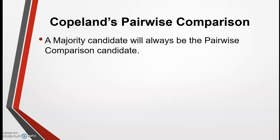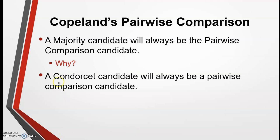As a review of Copeland's pairwise comparison: a majority candidate will always be the pairwise comparison winner, because a majority candidate will always beat everybody else head to head. If they beat everybody head to head, that makes them a Condorcet candidate, and a Condorcet candidate will always be the pairwise comparison winner because they will have more points than anybody else.